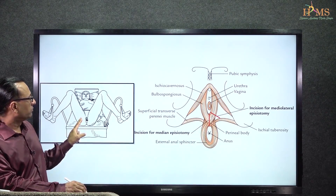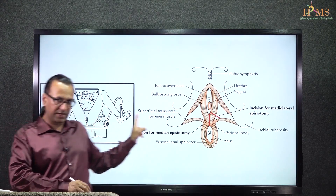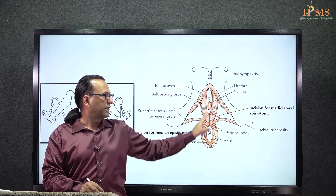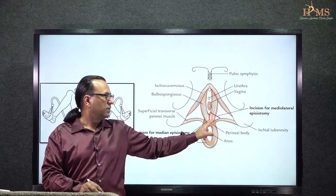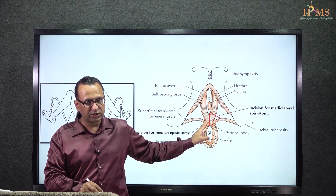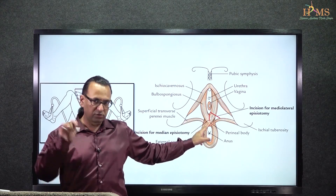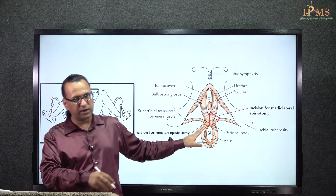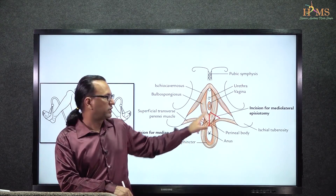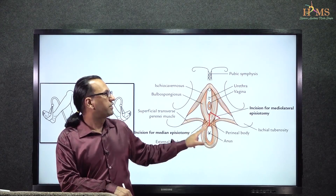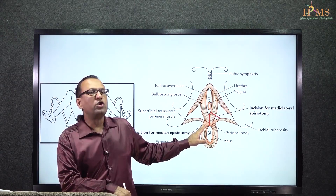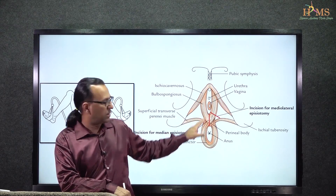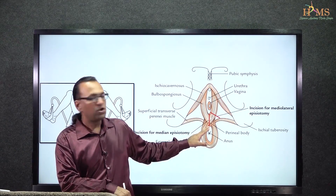When the baby comes, you have to enlarge the vaginal introitus by giving a clean surgical incision. Usually it is mediolateral, but you can also give it in the midline. You don't want laceration in this region because lacerations when the head of the baby comes will be difficult to suture. A clean incision can be sutured well to maintain the anatomy of the area. Without episiotomy, there can be a perineal body tear, all muscles here lose support, leading to prolapse — pelvic viscera prolapse, uterine prolapse, and rectal prolapse.